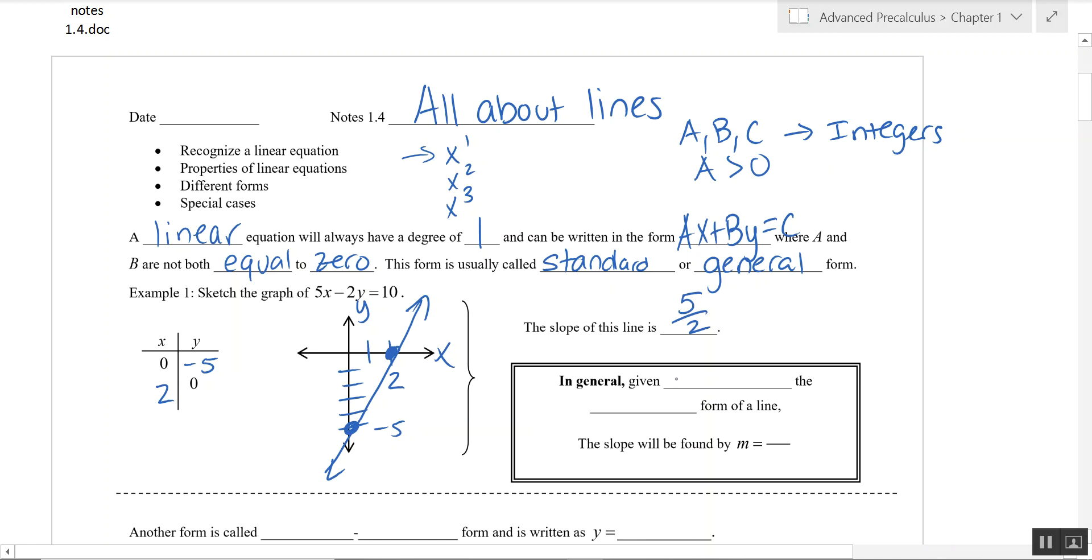But in general, the quick way to calculate slope when it's written in standard form is always going to be negative A over B. If you look at this example here, we would have had negative 5 over negative 2 or 5 halves. And you can see that matches with what we got graphically.